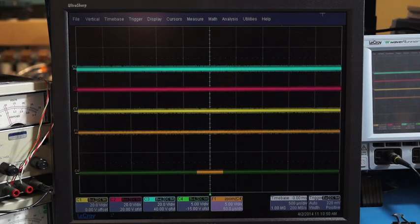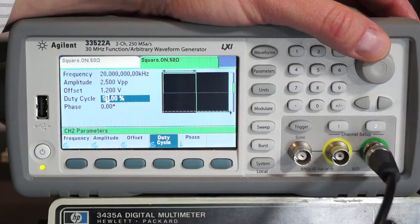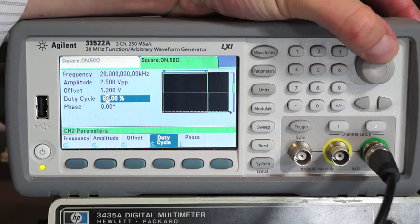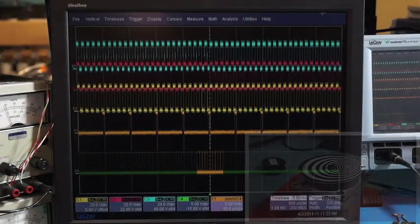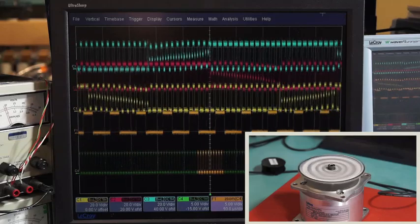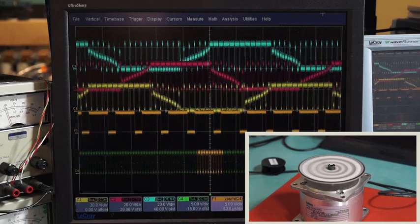Right now, we have zero duty cycle applied to the enable PWM input. We're going to use the dial to increase the duty cycle of the PWM on the enable input. As you can see, the output shown on the orange trace shows a low duty cycle square wave, and the motor begins spinning.